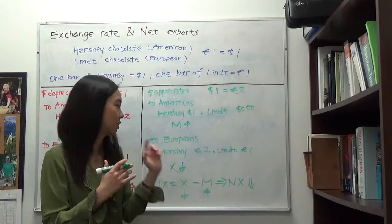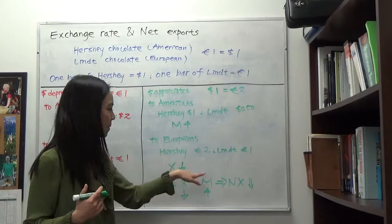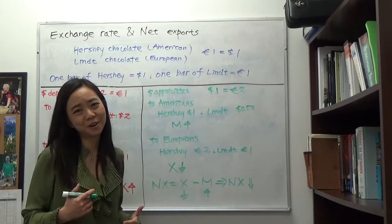Our net exports equal exports minus imports. Because our exports go down and our imports go up, our net exports go down.